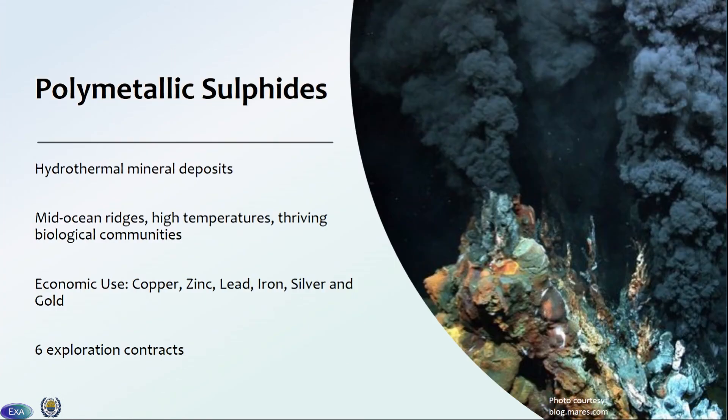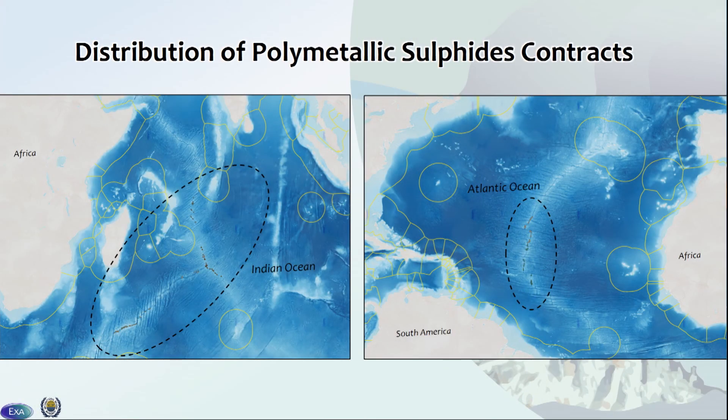Our next mineral environment are polymetallic sulfides. We actually got to see through the Nautilus Live webcam an active sea vent, which is where these minerals can occur. They're hydrothermal mineral deposits, either on active or inactive sea vents, mostly occurring in mid-ocean ridges at high temperatures with thriving chemosynthetic biological communities. Their economic uses are copper, zinc, lead, iron, silver, and gold. There are currently six exploration contracts, with a lot of them happening in the Indian Ocean and the Atlantic Ocean. On that bathymetry layer, you can see they really are distributed along those mid-ocean ridges.